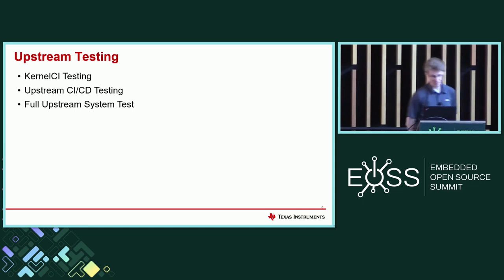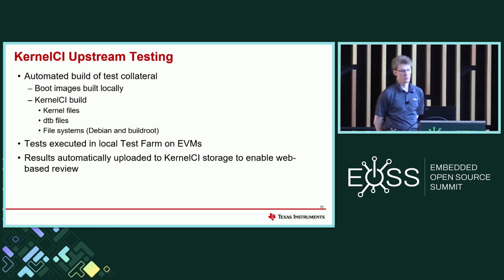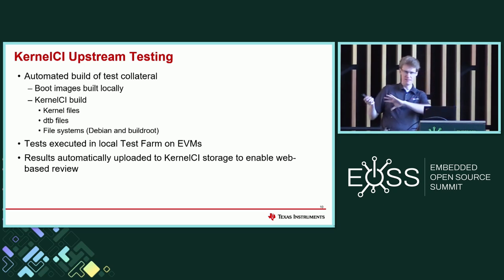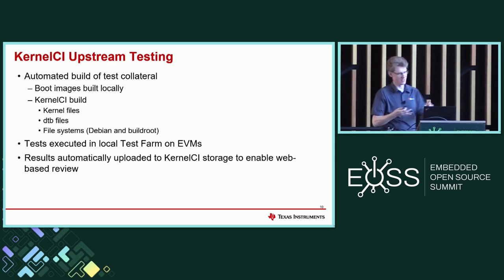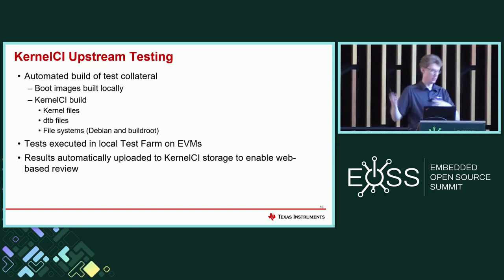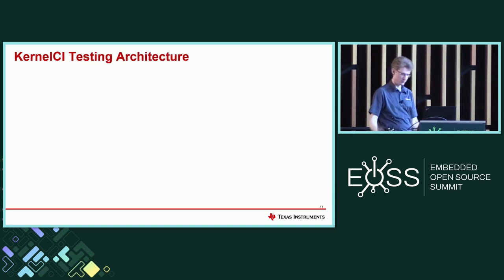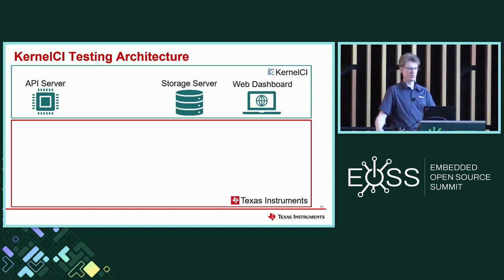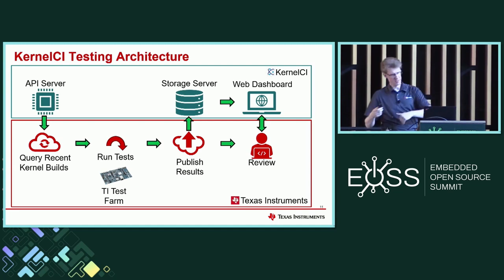For KernelCI upstream testing, we do automated build of test collateral. We build our boot images locally, but everything else is built at KernelCI, and we use the API to pull it down to our site — kernel files, DTB files, the file system. We pull that from the KernelCI cloud to TI and run those tests on our boards in Dallas and Bangalore. Results are automatically collected and uploaded to the KernelCI storage site for web-based review via the API server, storage server, and web dashboard.